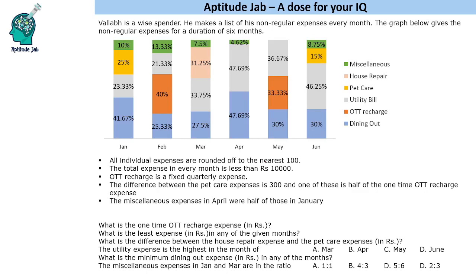All individual expenses are rounded off to the nearest hundred. The total expense in every month is less than ten thousand. OTT recharge is a fixed quarterly expense — it was paid in February and in May, so both values are equal. The difference between the two pet care expenses is 300. One of the pet care expenses is half of the one-time OTT recharge expense. The miscellaneous expenses in April were half of those in January.